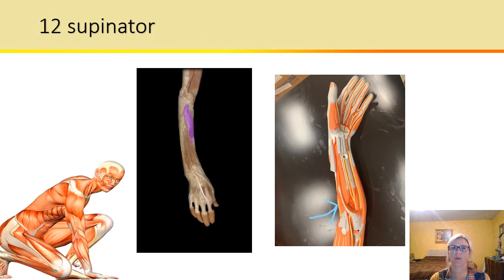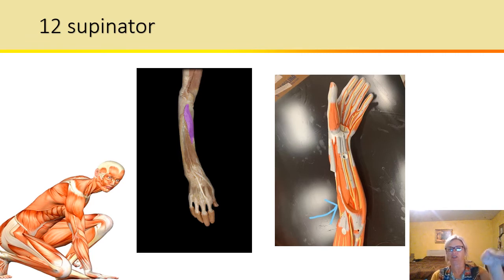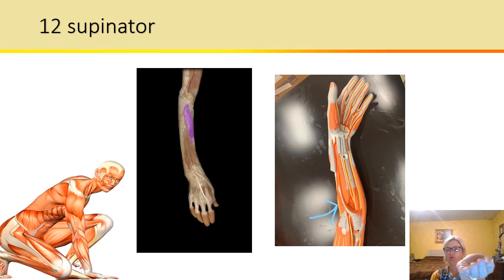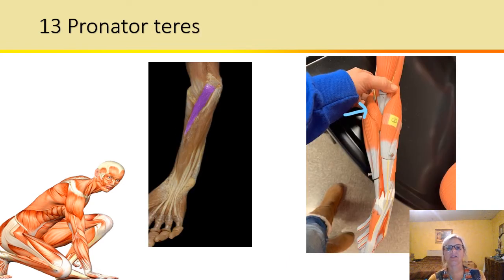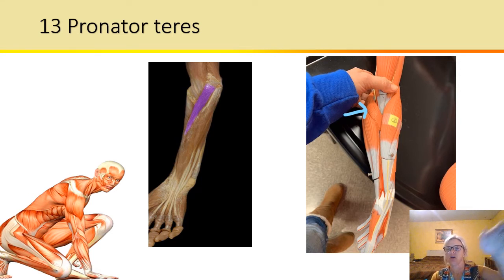So here we have the supinator muscle. What does it do? Well, it causes supination — if you're this way and you supinate, you're going to hold your bowl of soup. Remember that teres means rounded, so pronator teres — pronation means pour it out.